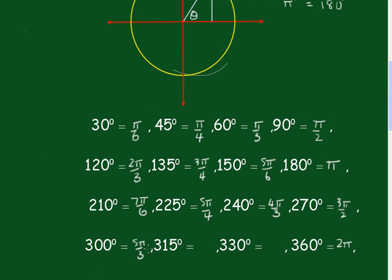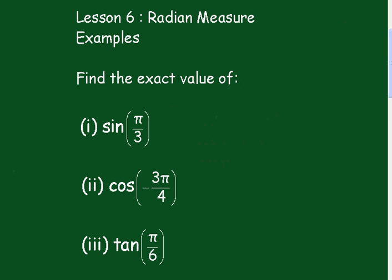300 degrees is 5π/3. 315 degrees is 7π/4. 330 is 11π/6. Alright. Now, we'll be using these when we graph these functions from 0 to 360 degrees.